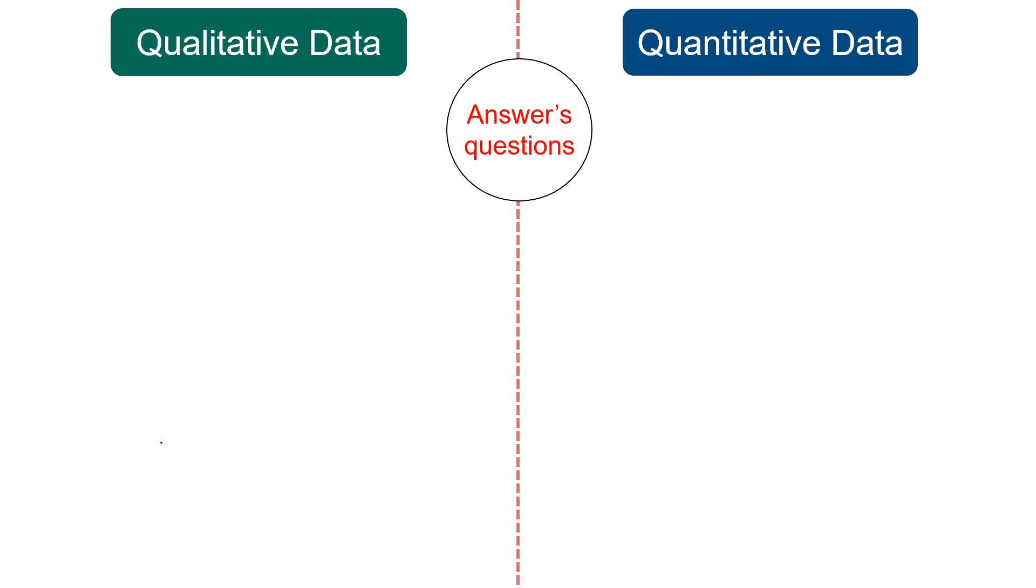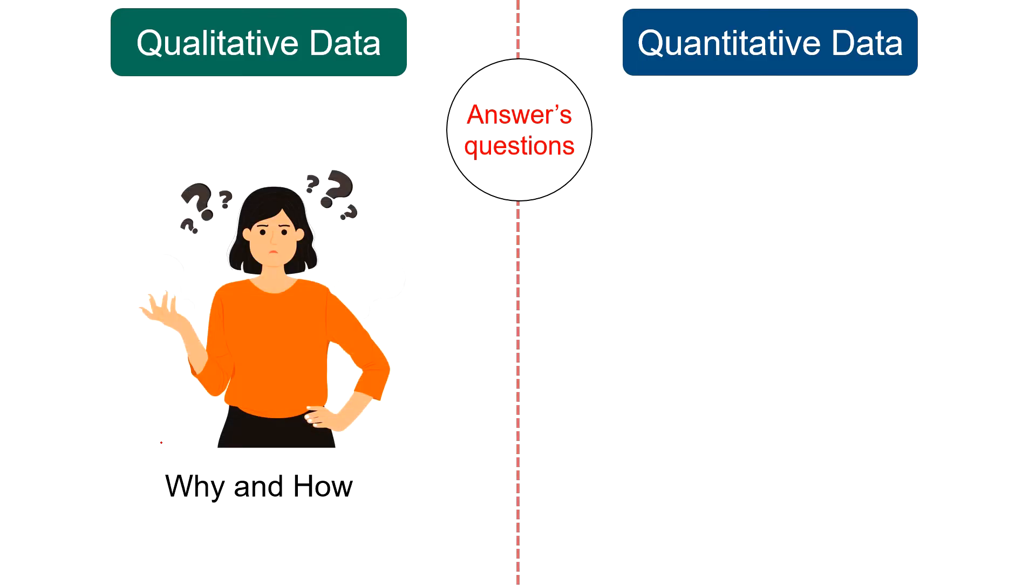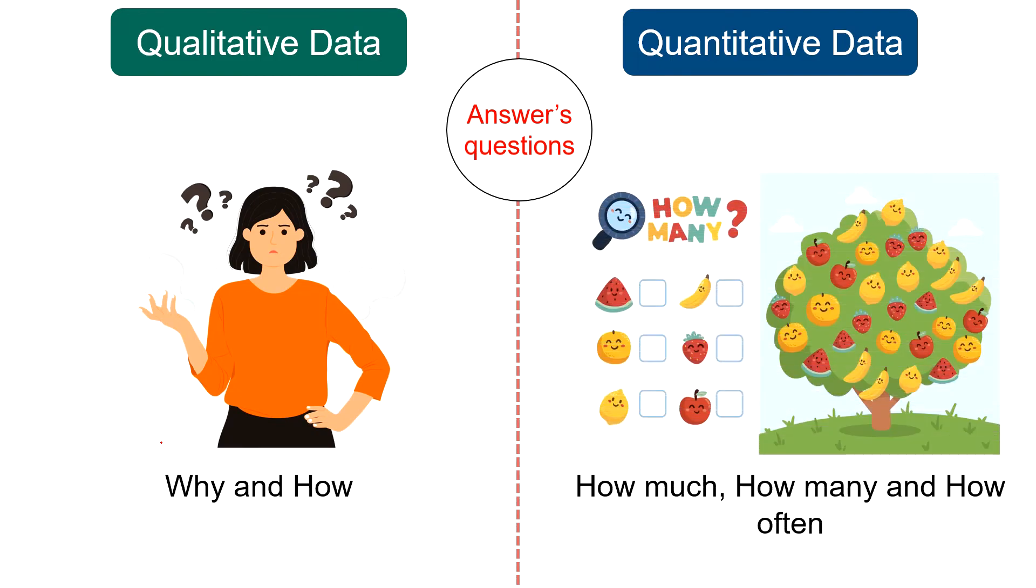What type of questions it answers: While qualitative data describes attributes and so it helps in understanding why and how behind any behavior. Quantitative data, on the other hand, explains how many, how much, and how often.